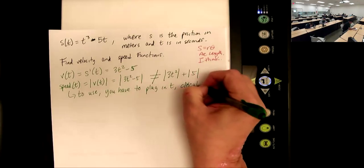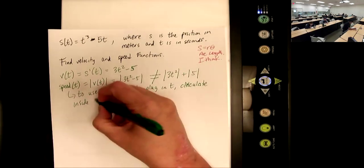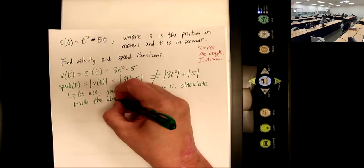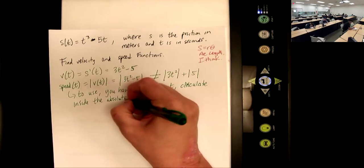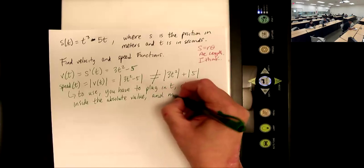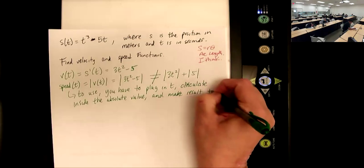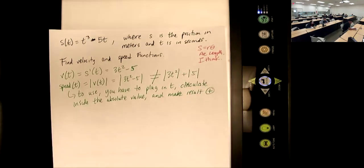So if I want to find velocity, I have to take the derivative of s. And what's the derivative of s? 3t squared minus 5. The speed function, they don't have a letter for speed. I'm just going to say speed of t. That's the absolute value of v of t.